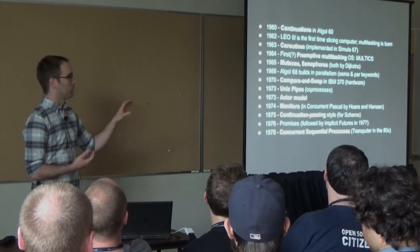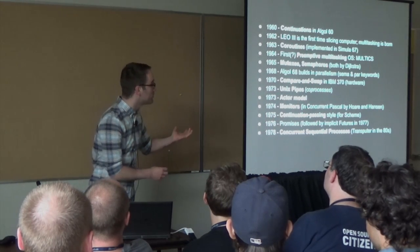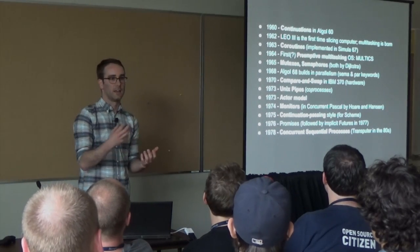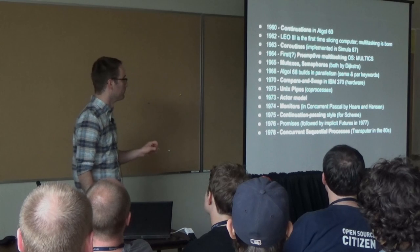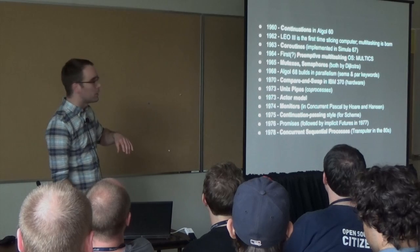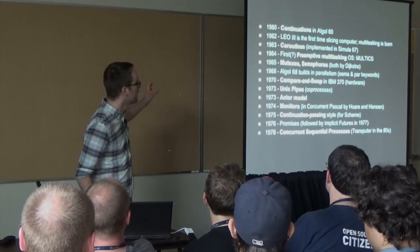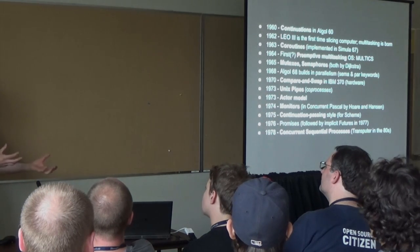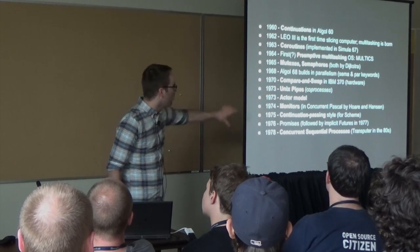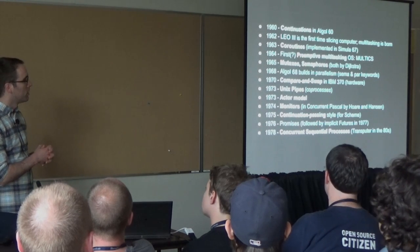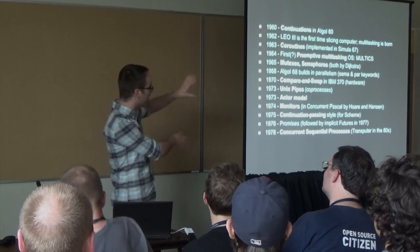In 1968, Algol 68 actually built in parallel keywords and other keywords specifically for concurrency. So these aren't new ideas — we've had these features in languages since before I was born. In the 70s, compare-and-swap in hardware allowed for easier concurrency programs. Unix pipes became really interesting because they allow multiple processes to cooperate around sharing information. The actor model and communicating sequential processes all came out in the 70s — fairly high-level sophisticated models. So that's basically the end of concurrency history.